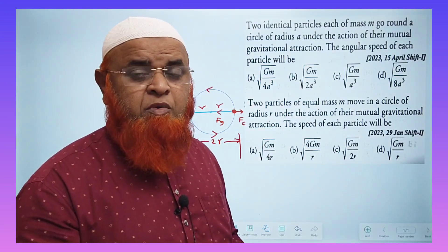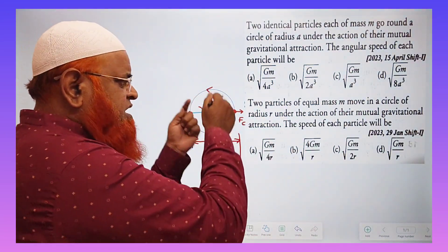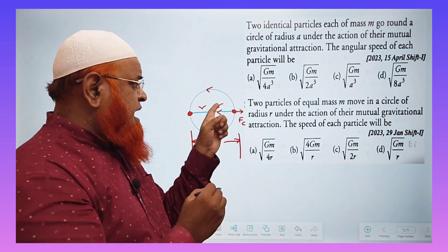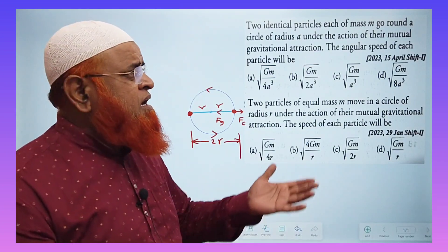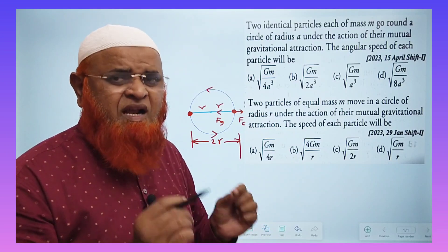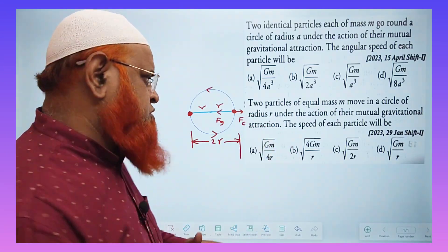So, I thought of discussing this problem with you in a simple way, super simple way. What is that here? You can just see here. These two particles are rotating about a circle here. And the radius of the circle is taken as R. In the first problem, it is taken as A. In the second problem, it is taken as R. But both the problems are slightly different. Their nature of solution is same. Let me discuss about this problem here.